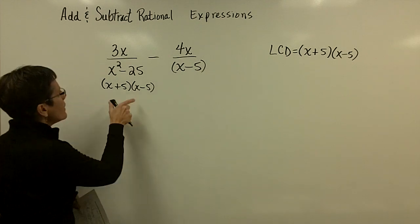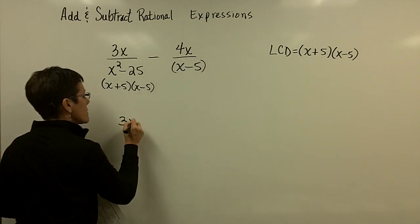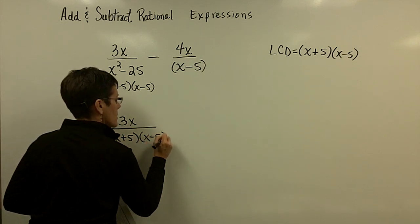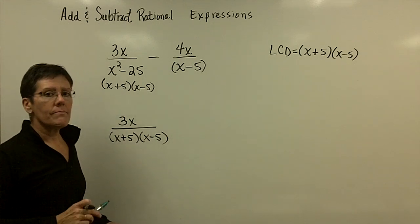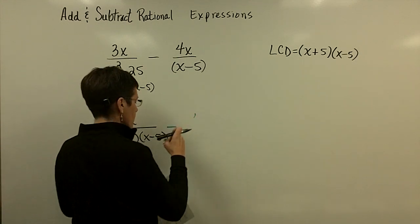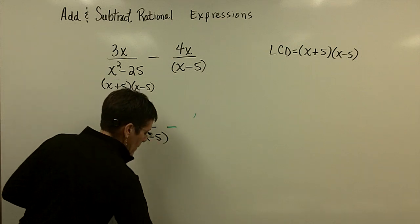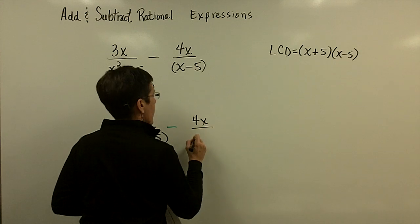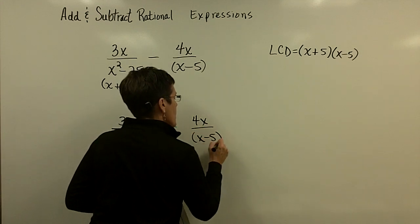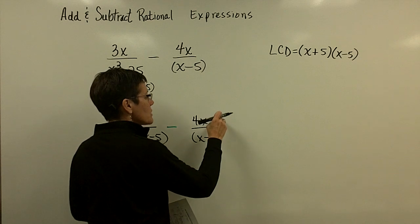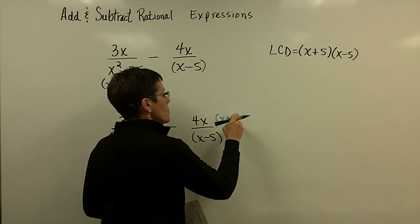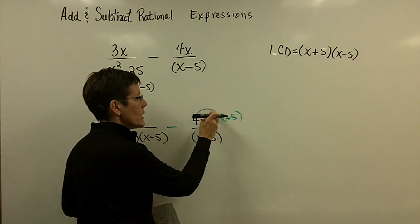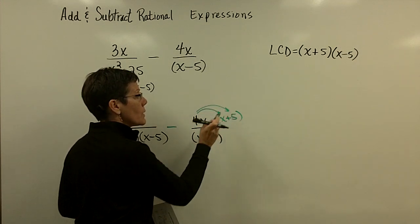This fraction, the 3x, which has an x plus 5 and an x minus 5 in its denominator, it's all set, it's got the LCD. But this fraction right here—I meant to do that with that minus sign, I wanted to make myself aware—it has got the x minus 5 but it's missing the x plus 5. So I'm going to multiply top and bottom. But whatever you do, remember you've got to call that 4x squared and 20x.